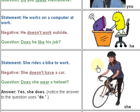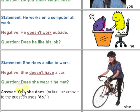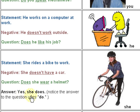You see this beautiful young lady. 'She' is used for women. Statement: 'She rides a bike to work.' The negative: 'She doesn't have a car.' Question: 'Does she wear a helmet?' This is a helmet. This is a bicycle. The answer is — since this is a yes-no type of question — yes, she does.